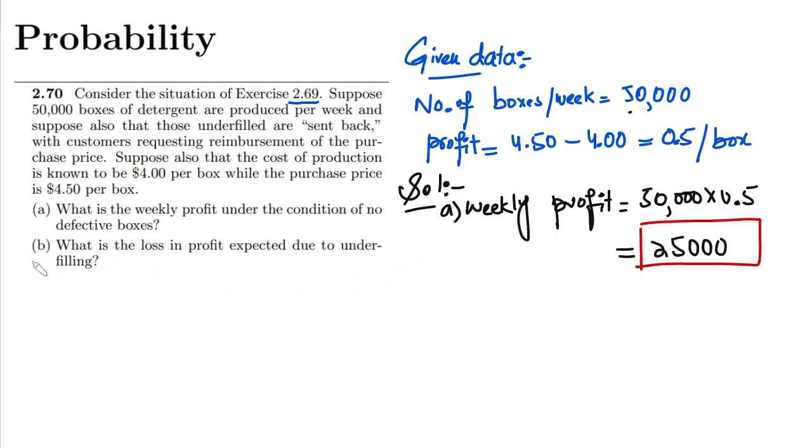Similarly, in part B it is asking us what is the loss in profit expected due to underfilling. As given in exercise problem 2.69, the probability of underfilling is 0.001. Since the probability is already given, the total